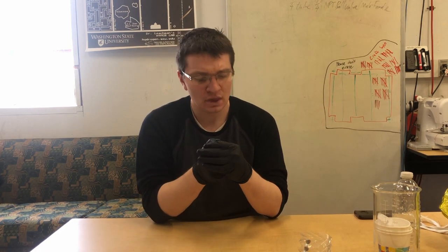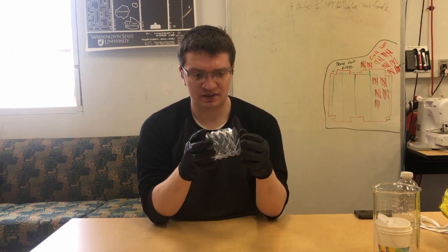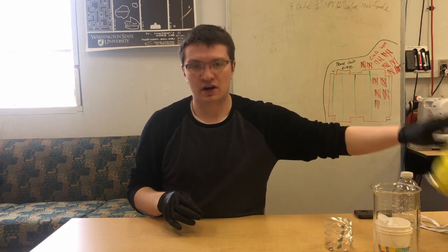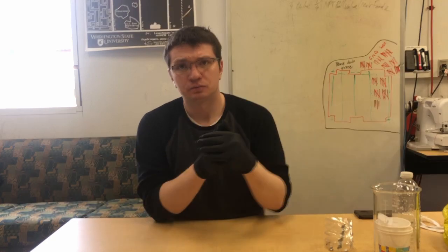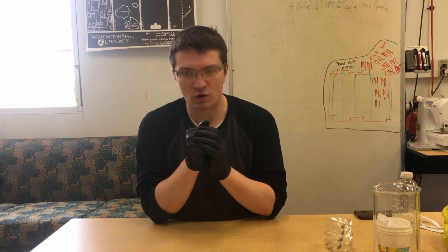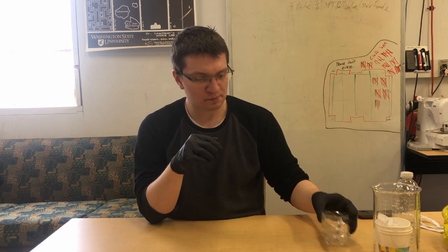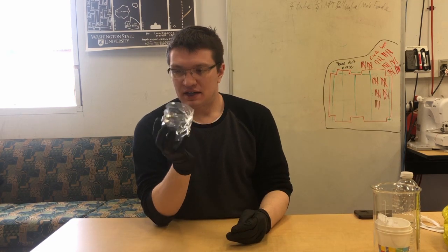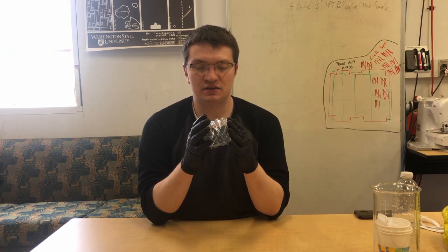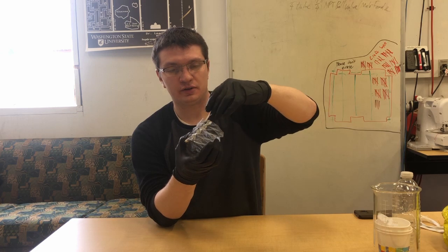And so clearly it seems that origami bellows are one way of getting around the tearing problem. So the next things you have to solve though, we've got around the tearing problem, but the next series of tasks that we need to get around is essentially sealing the seams.